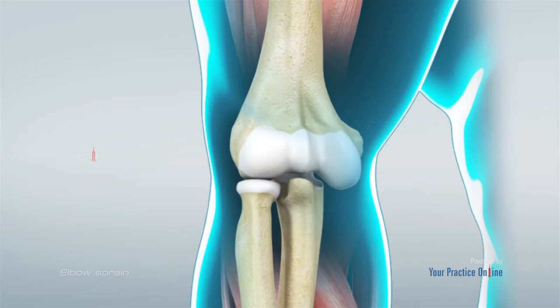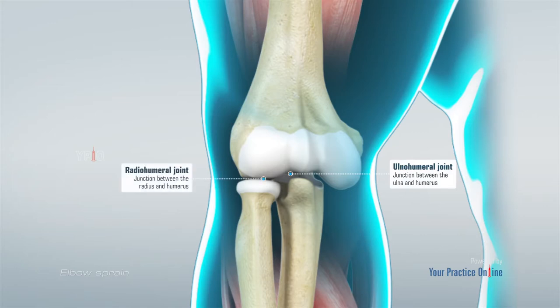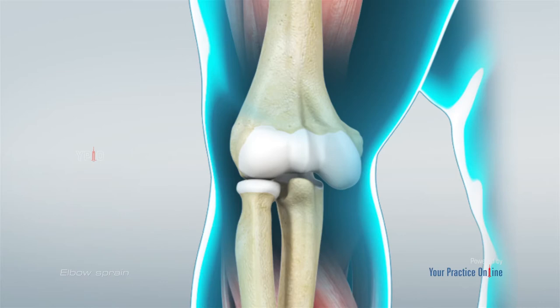The three joints of the elbow are: the ulno-humeral joint, the junction between the ulna and humerus; the radio-humeral joint, the junction between the radius and humerus; and the proximal radio-ulnar joint, the junction between the radius and the ulna.